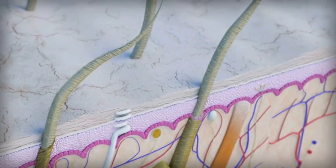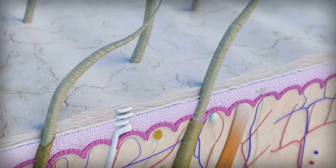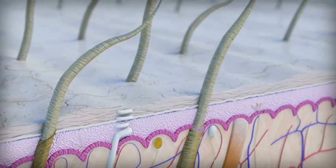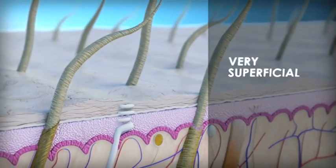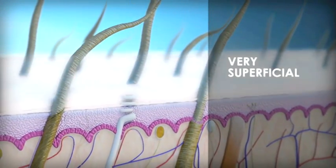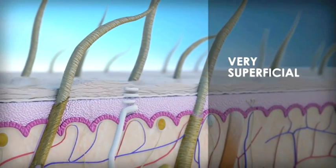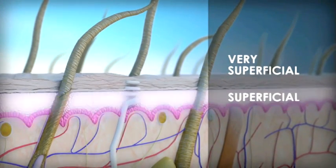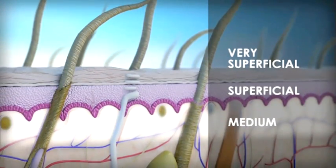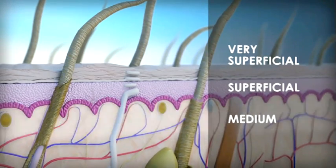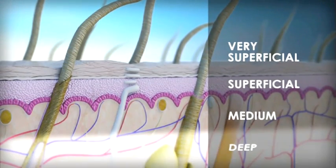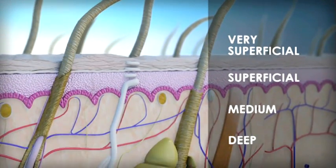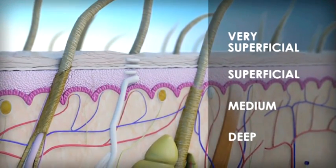Chemoexfoliation can operate at different structural levels of the skin and can therefore be defined as very superficial, involving the stratum corneum; superficial, involving the living epidermis; medium, involving the papillary dermis; and deep, involving the reticular dermis.